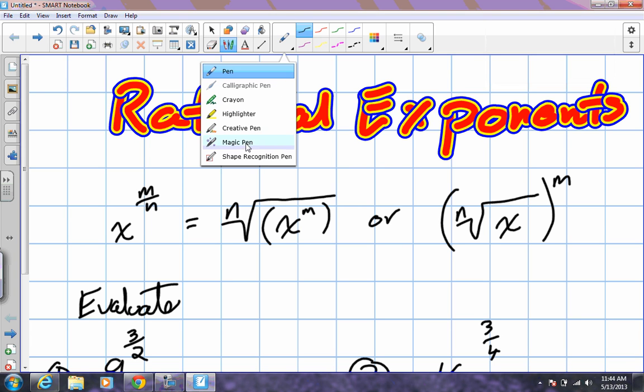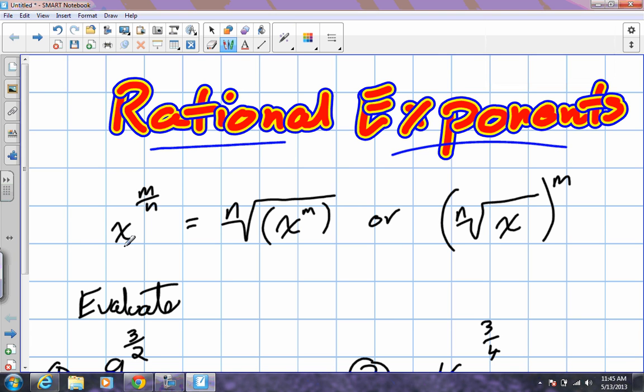So we're going to go over rational exponents, and we have a formula here that you guys are going to need to remember. So a base to a power that is a fraction. How can we write this so that we can possibly evaluate these numbers?